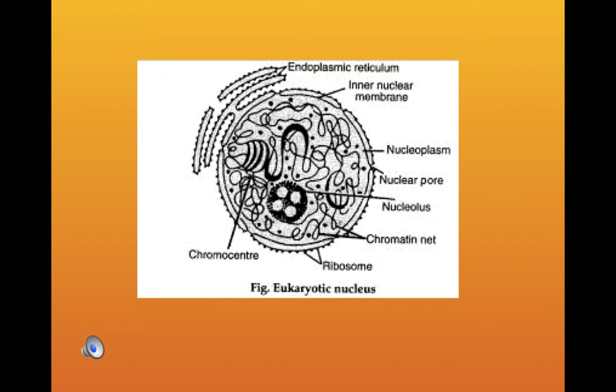In the first slide we can clearly see the structure of a nucleus. It is surrounded by a double-layered nuclear membrane with nuclear pores. The ground substance of the nucleus is a semi-solid substance called nucleoplasm, containing one or more round-shaped nucleoli. The nucleoplasm contains a network of dark colored fibers called chromatin fibers, which condense into short thick chromosomes during cell division.